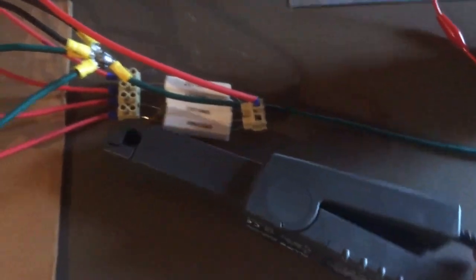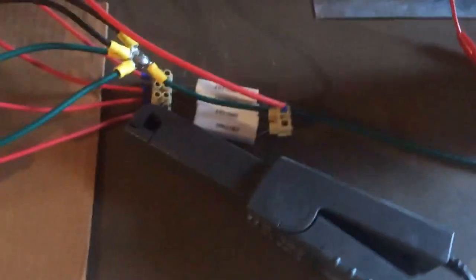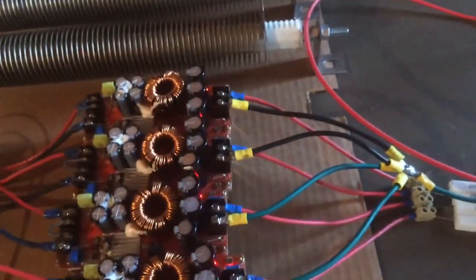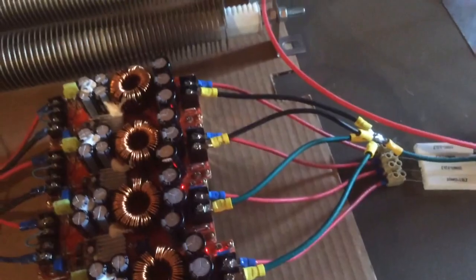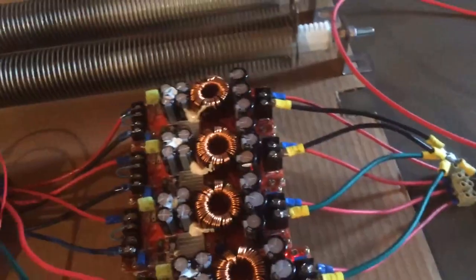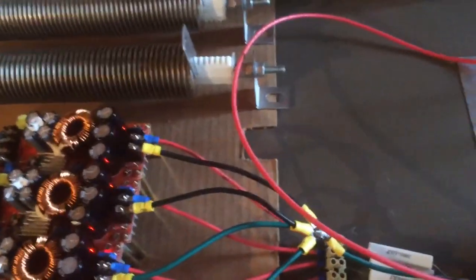So we're gonna go ahead and I'm gonna use my current probe here and we're gonna check each of the outputs now this is on 10 millivolts equal to 1 amp, so you got to move a few zeros we'll do that for you as we go.